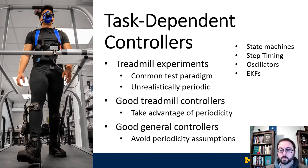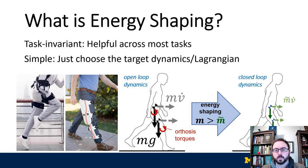Energy shaping is a control method that lets you take the dynamics of a target human system that has an exoskeleton attached to it and reshape those dynamics to match a new target that you specify using Hamiltonian and Lagrangian mechanics.